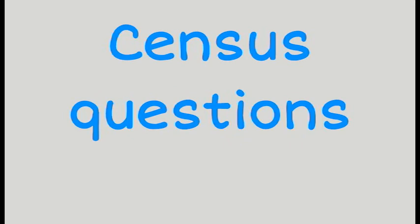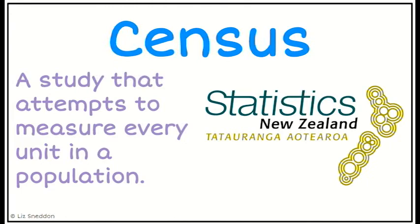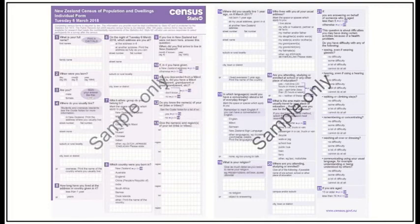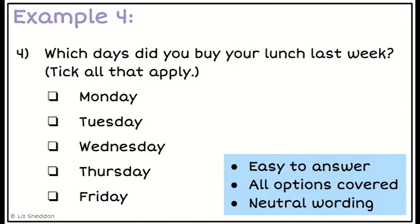As some more examples, Statistics New Zealand is the government organisation that writes our census questions, and this is usually done every four years. They want to get really accurate and reliable data, but that does come with a huge cost and time to collect. Here are some examples of the individual form that every single person fills in. We want to look for: are the questions easy to answer, do they cover all of the options, and is the wording quite neutral?